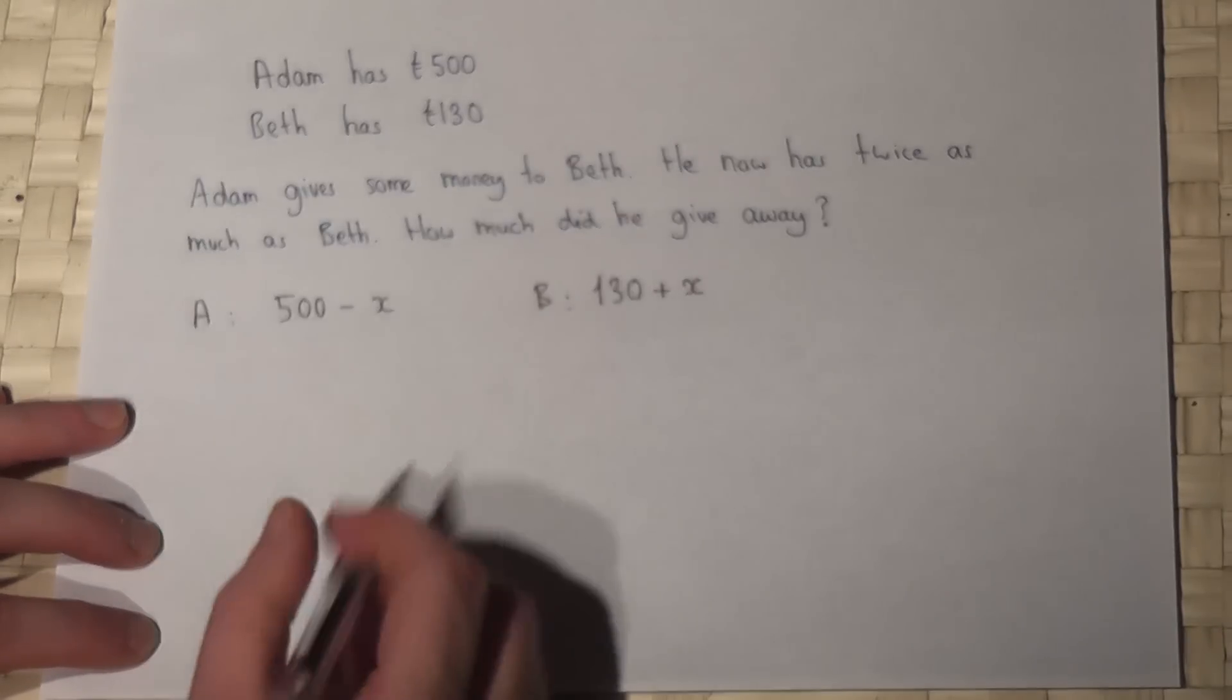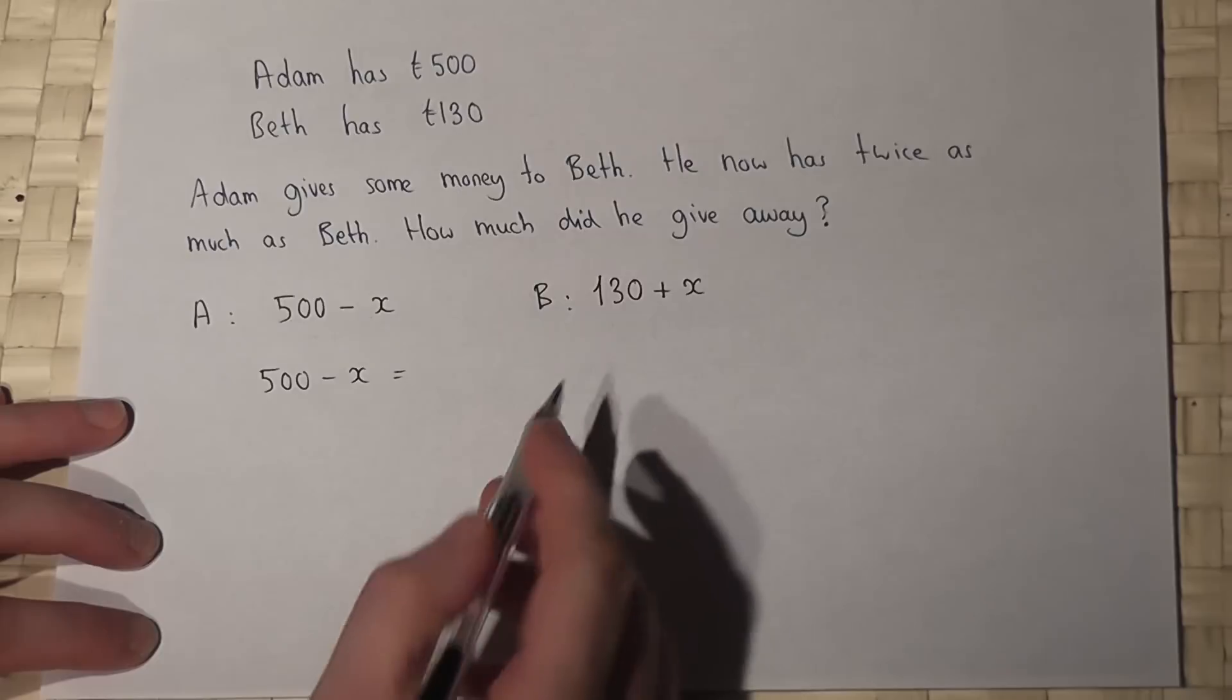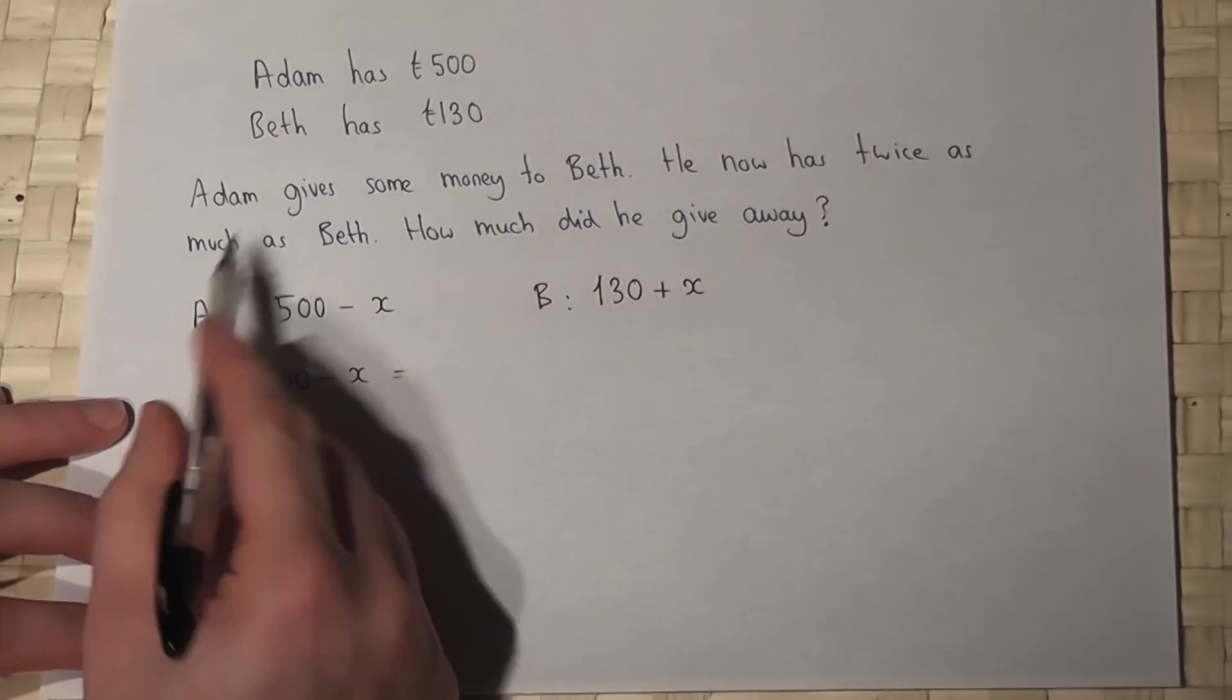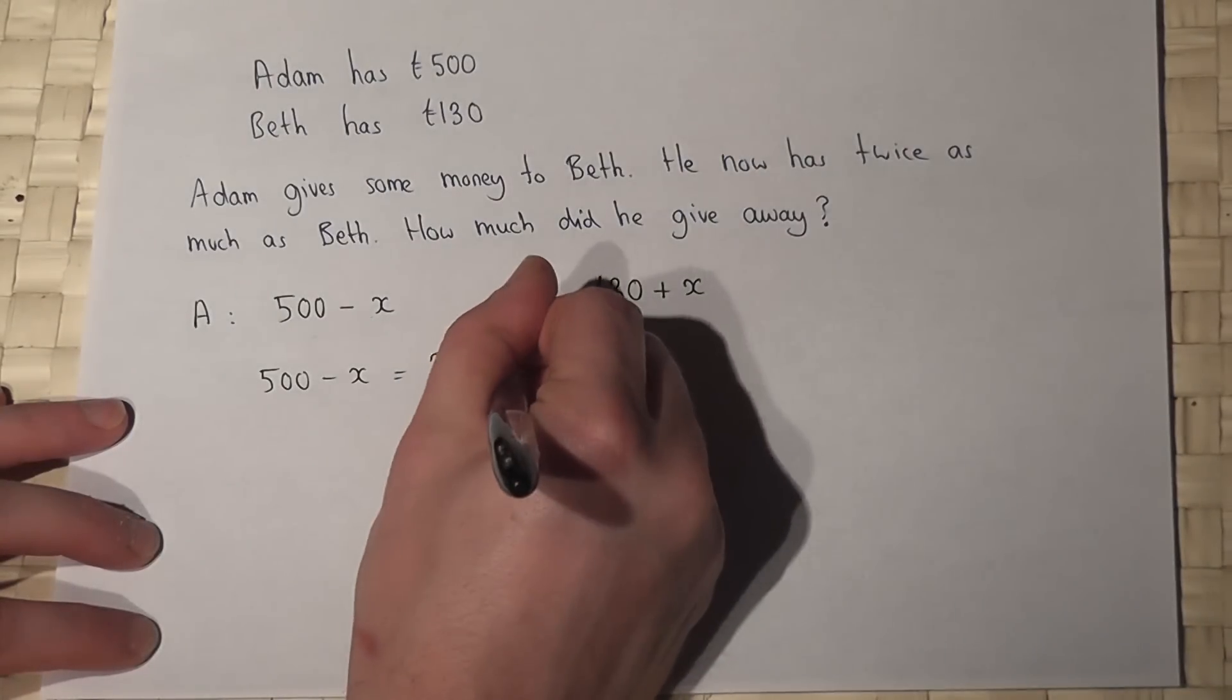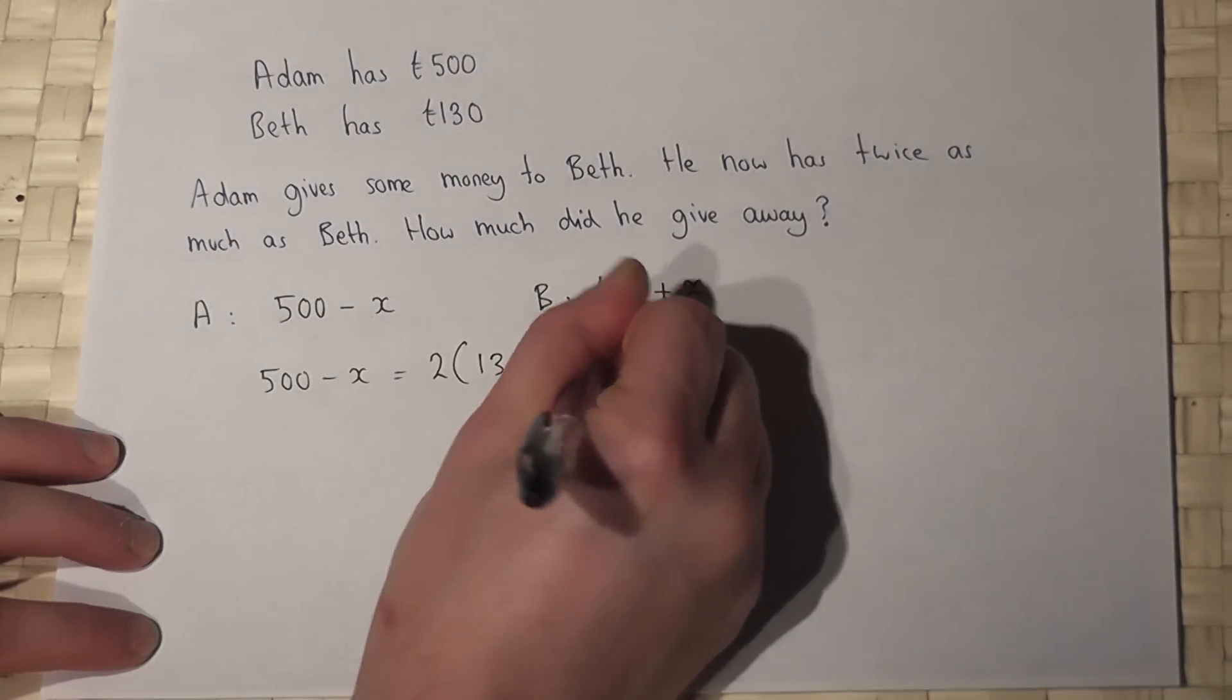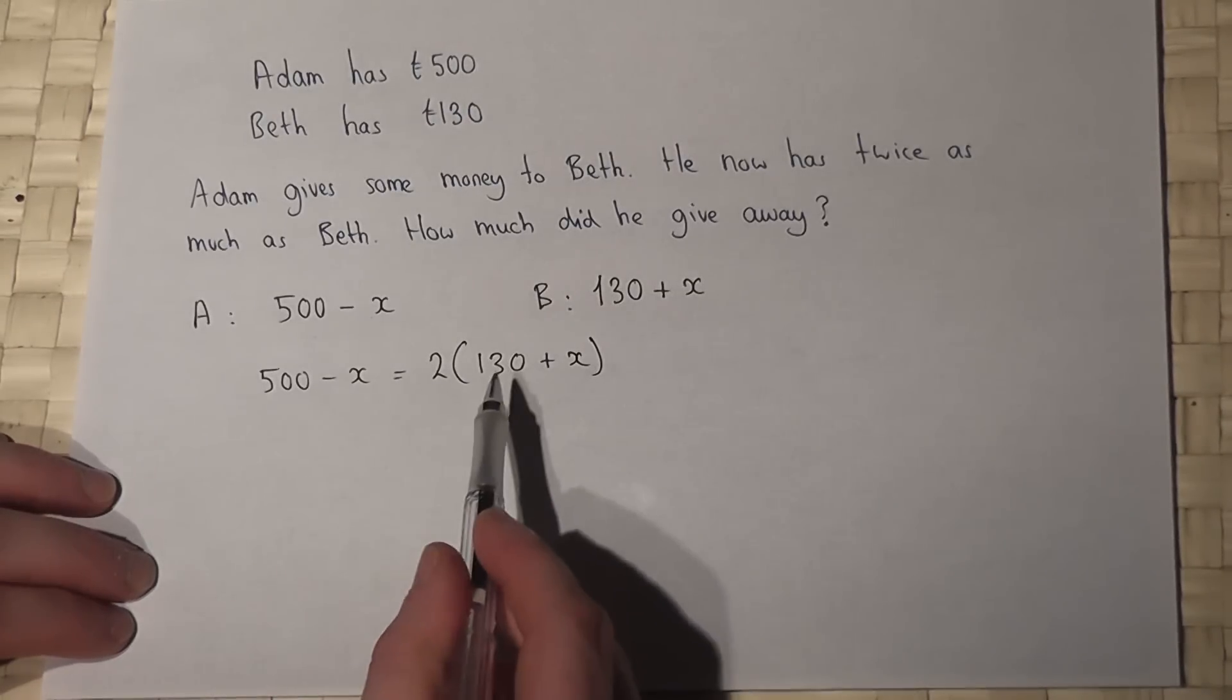Now the amount which Adam has got is twice the amount which Beth has got, so this will equal 2 lots of Beth's amount. If I solve this equation for X, I will then know how much money he gave away.